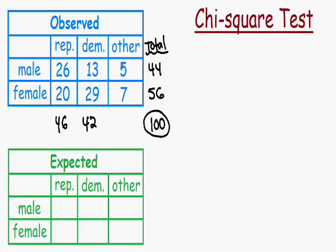For all of the others, we have 5 male others and 7 female others. 5 plus 7 is equal to 12 people who are not Republican or Democrat. And if we add all of the column totals, 46 plus 42 plus 12 is also equal to 100, which confirms we have 100 people total in this study.